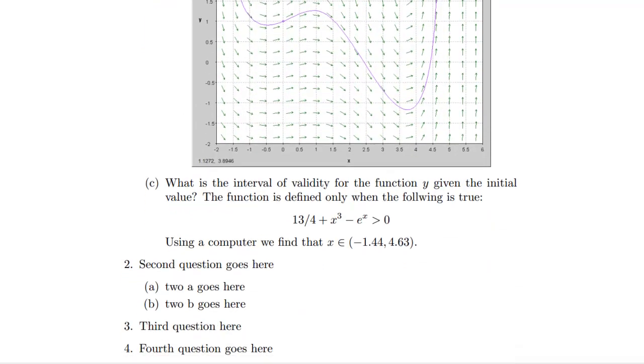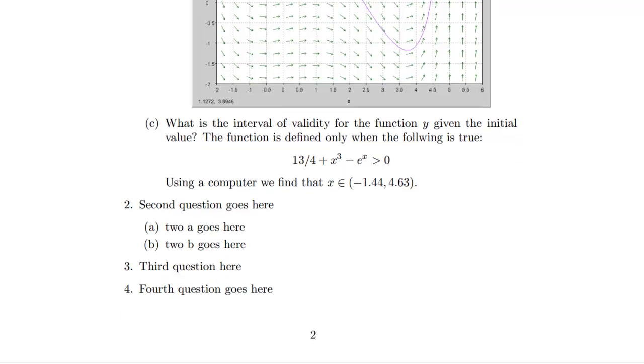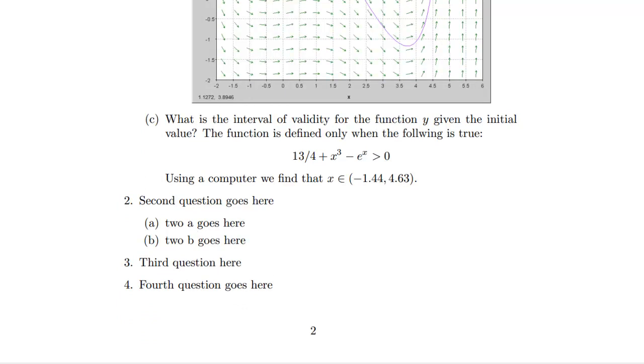And then the interval of validity, like I said, very short. Function is defined only when the following is true, because that's under the square root. Using a computer, we find that X is in this interval, and we're done. If there were more questions, they would be down there, and we'd go ahead and answer them in the same fashion.